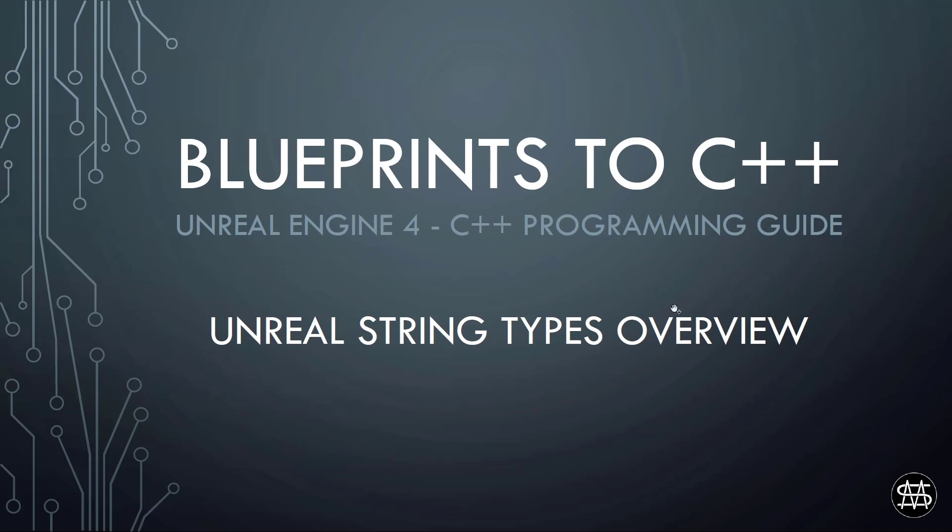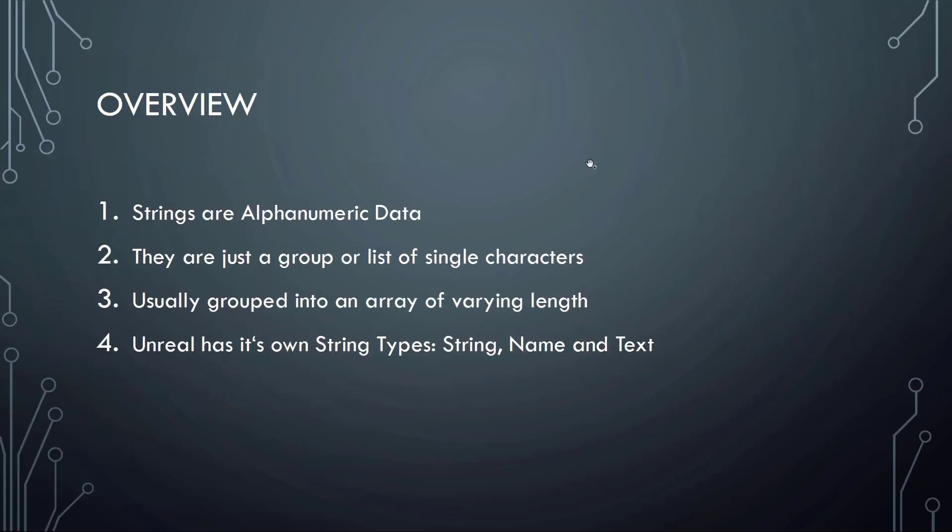So let's have a look at what strings are. Strings in general are alphanumeric data, so they can include numbers and characters. They're just a group or list of single characters, usually grouped into an array of varying length. Compared to native C++ string types, Unreal has its own types called string, name, and text.